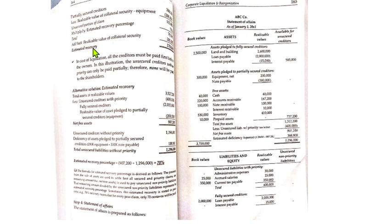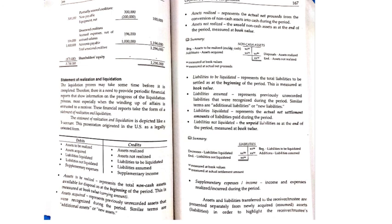Step 4 is the statement of affairs itself, which presents both book values and realizable values, identifying fully secured, partially secured, and free assets, as well as the liabilities and equity. Please continue to the next video for more on accounting for corporate liquidation. Thank you.